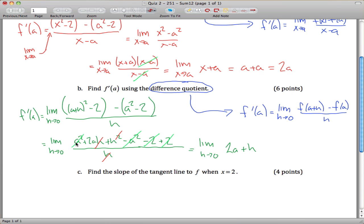2a came from here and h from here, and this is a limit we can evaluate. Change the h into a 0, and you get 2a, same thing we got up there.